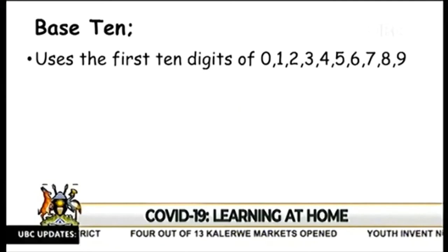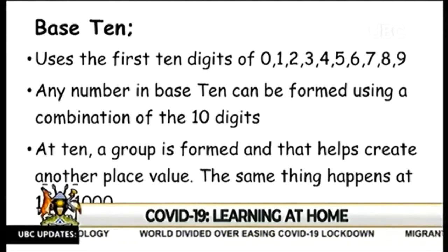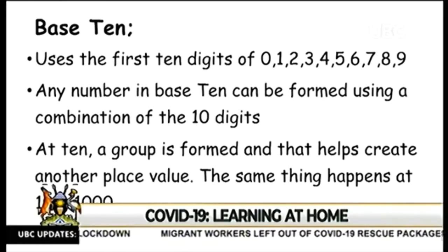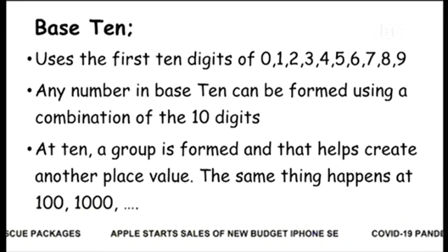Thank you very much. I hope that has been refreshing to you, and you've been able to remind yourself of the abacus — it is still very important. As we look at base 10, we have learned that we have used only 10 digits. Base 10 uses only those 10 digits, and we can form any number by combining any of them. We have also seen that base 10 counts in groups — at 10, a group is formed and that helps create another place value. The same thing happens at 100, at 1,000, and the rest of the place values, like you've seen in the video with the abacus.